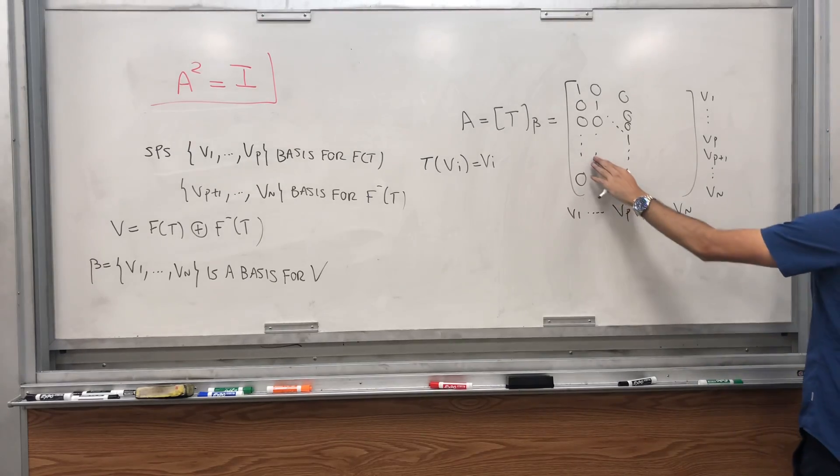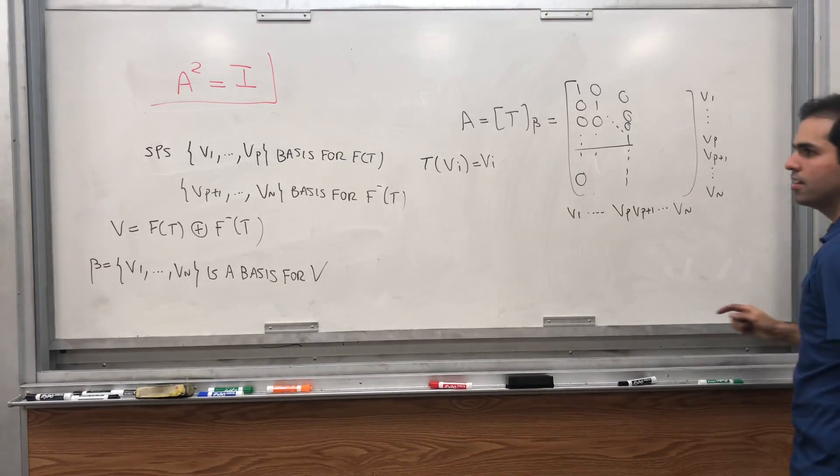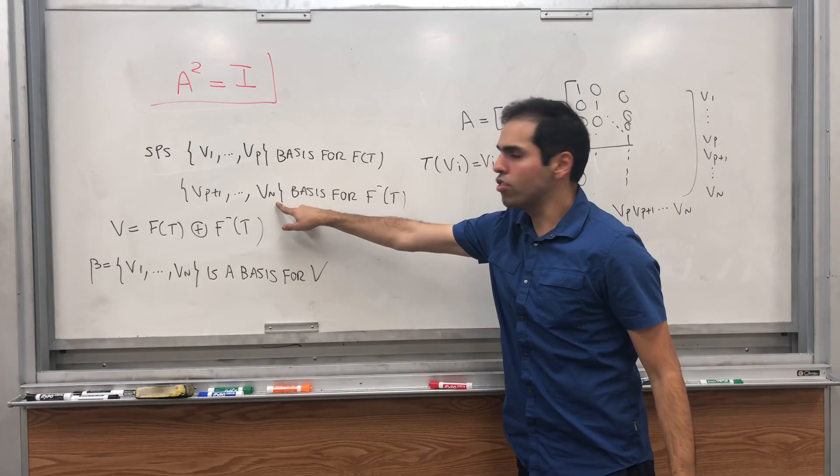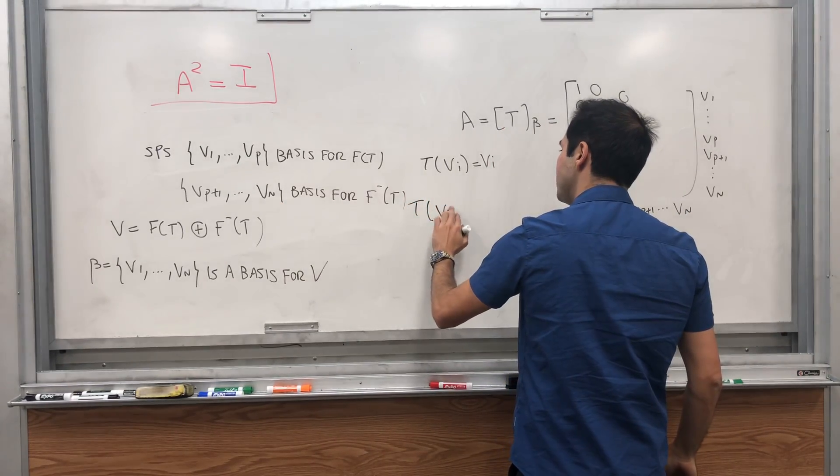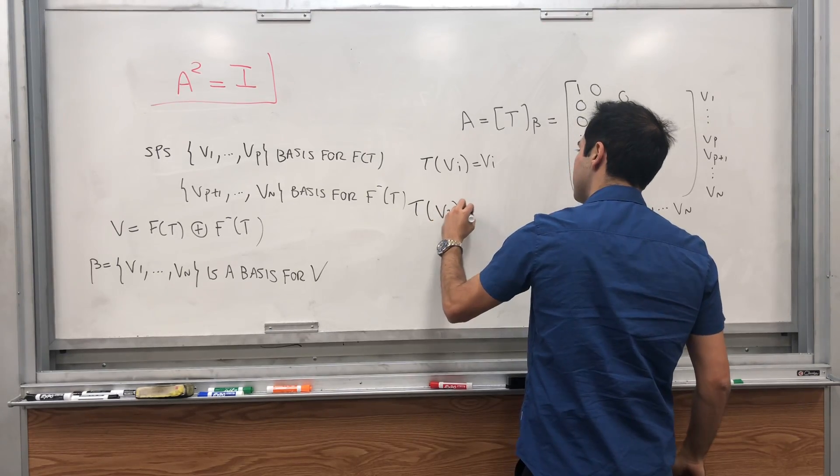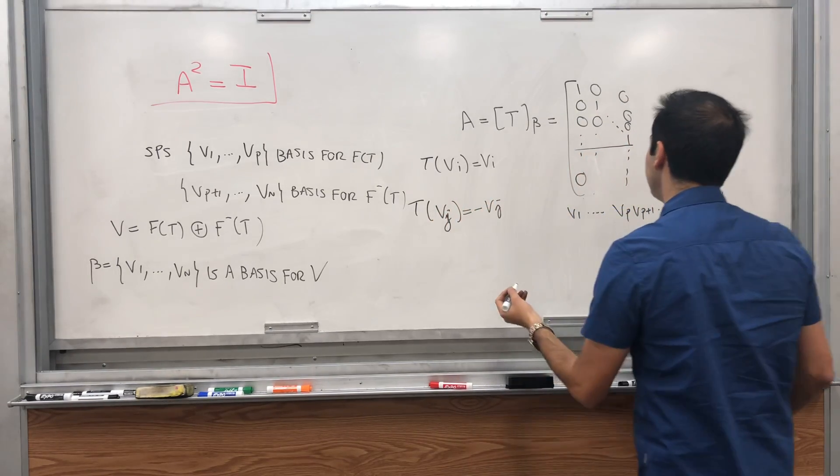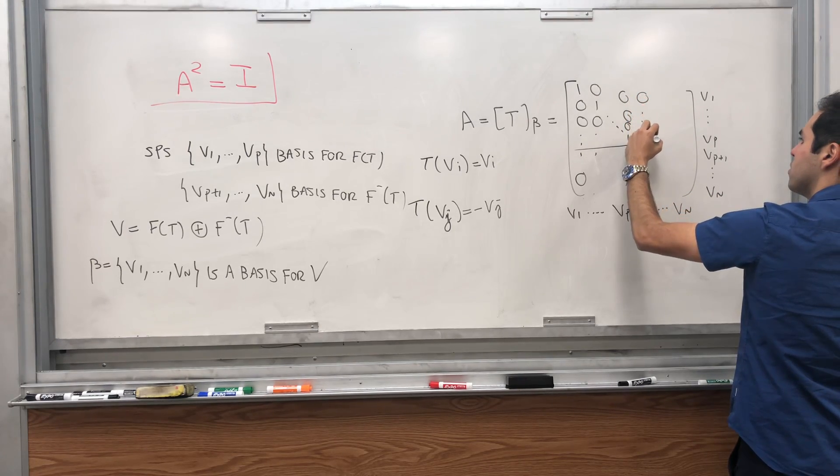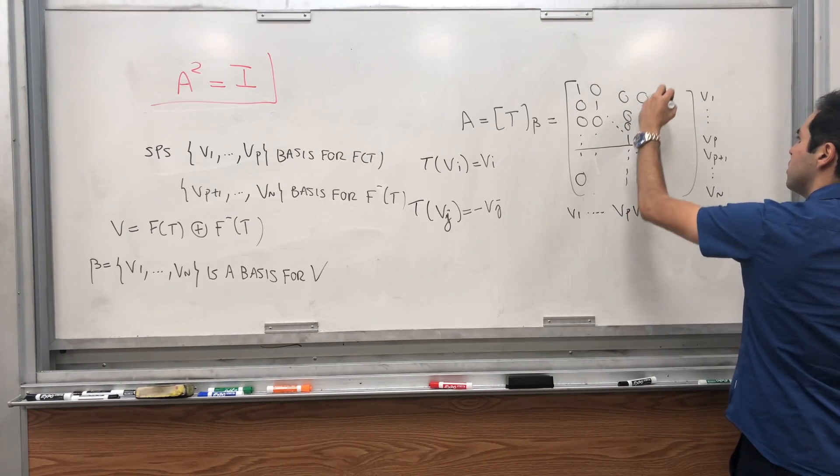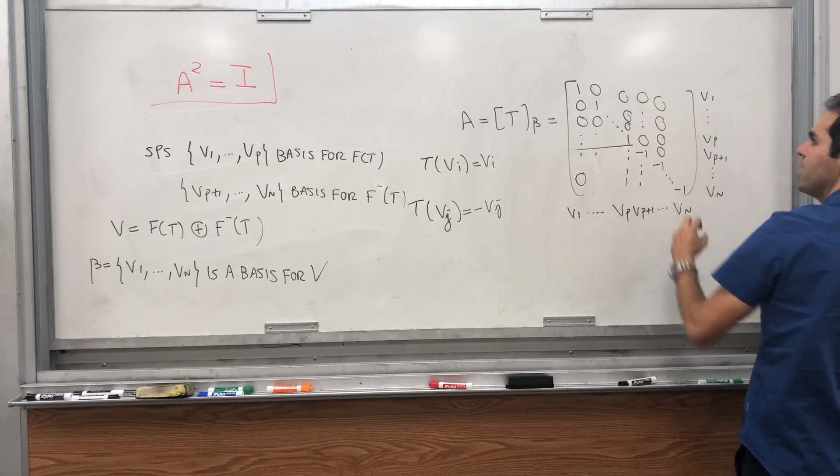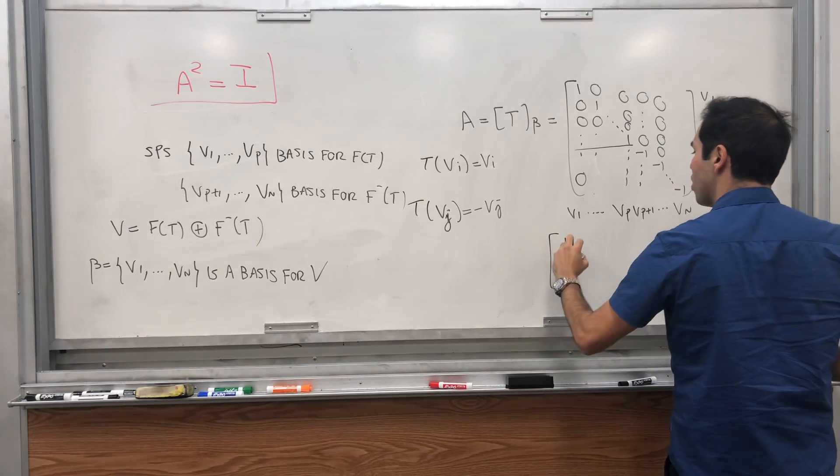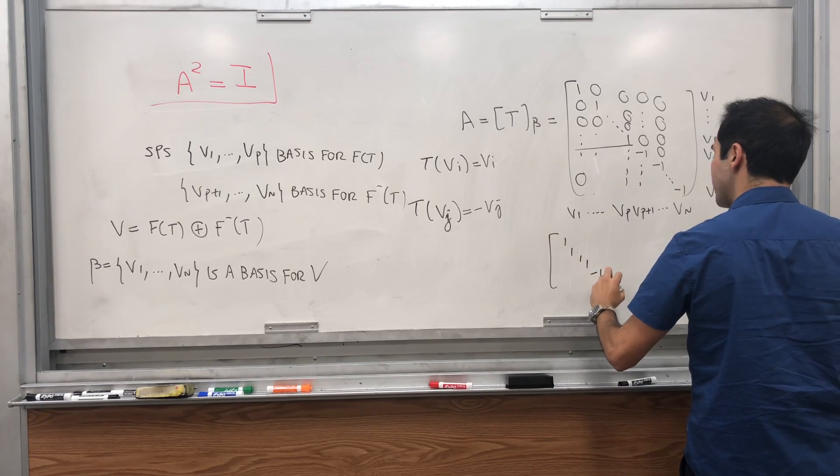And so in particular T(V1) is V1, which is 1 times V1. T(V2) is V2, which is 1 times V2, up to Vp. So on the one hand it becomes like the identity matrix. On the other hand for those vectors it's just as minus it, so Vj is minus Vj, which means it's the same thing but with minus ones. Da da da, and then 0, 0, 0, 0, minus 1, da da da, up to minus 1.